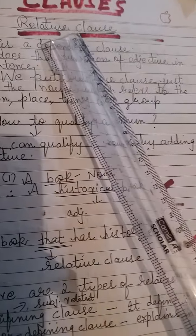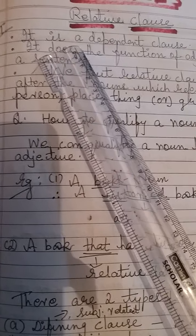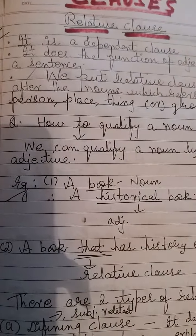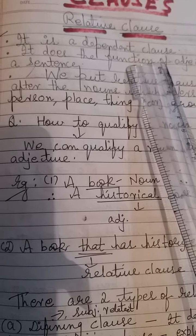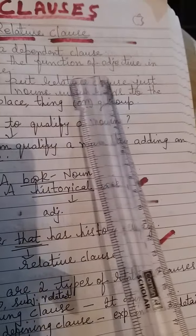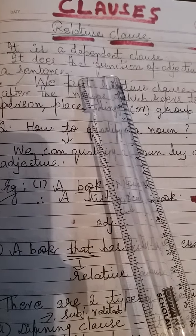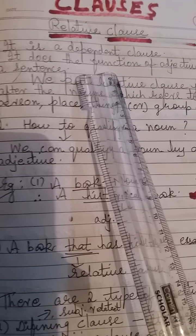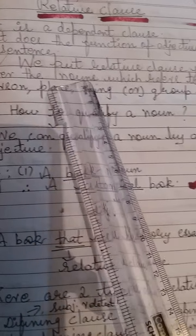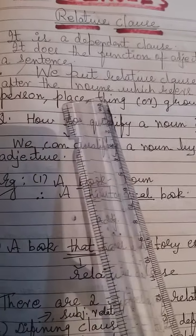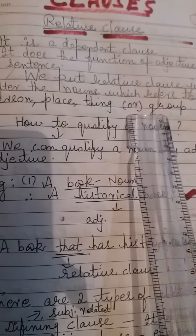Today's topic is all about relative clauses. First, let's look at the definition. It is a dependent clause — not an independent clause. It does the function of an adjective in a sentence, so it works like an adjective. We put a relative clause just after the noun which refers to a person, place, thing, or group.